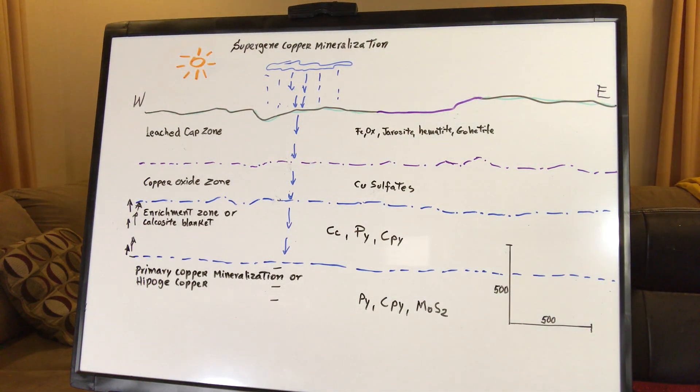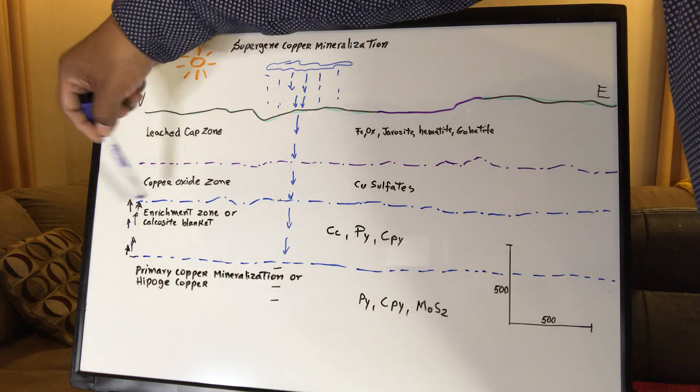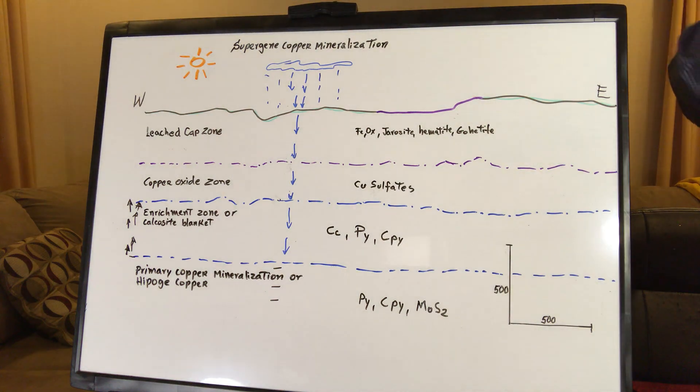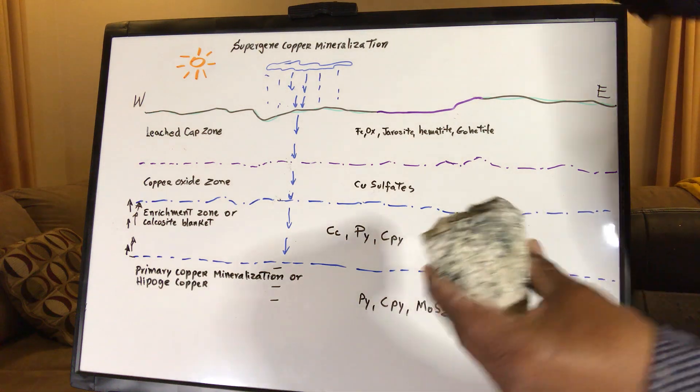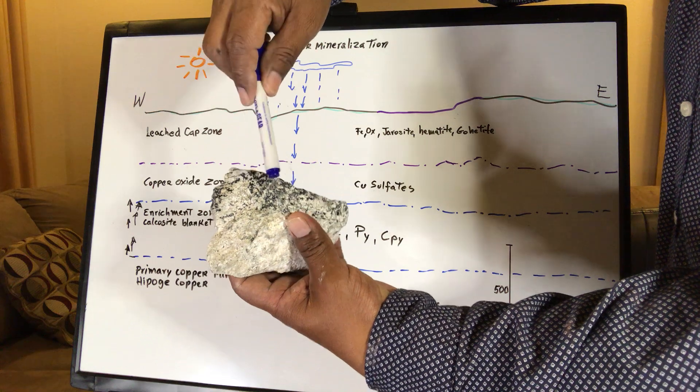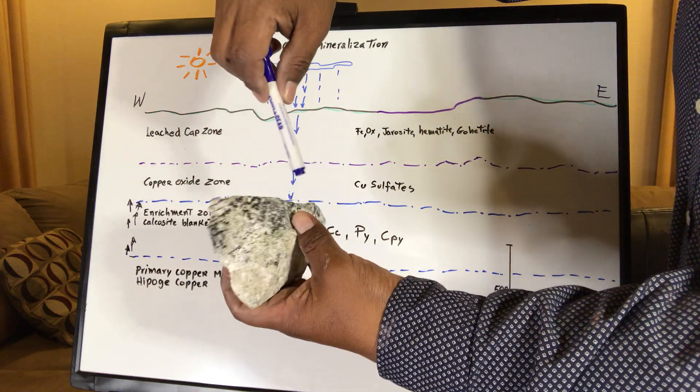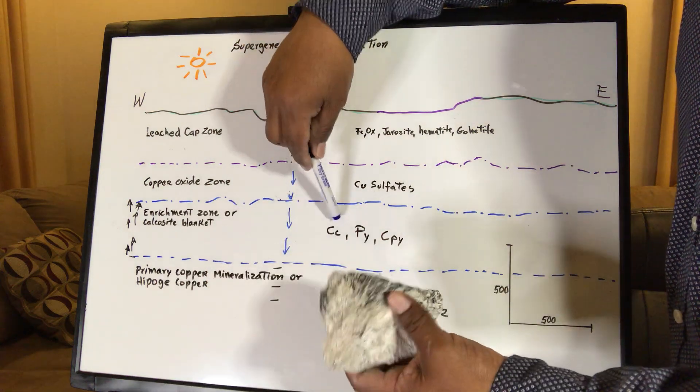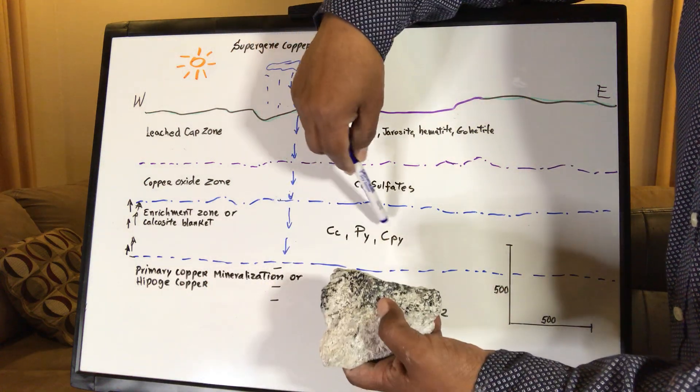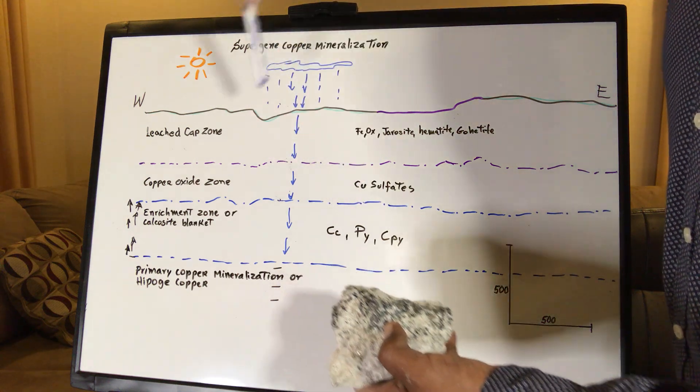And then show up this area with a enrichment zone or chalcocite blanket. So in this area, that's where it started to show up. We have some pyrite in here. And all the dark black or dark gray, it's chalcocite. We have chalcocite. We have pyrite.